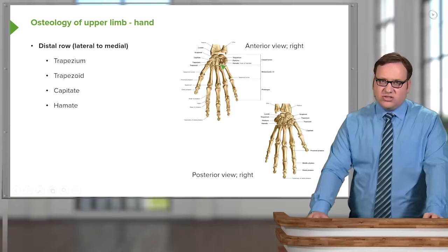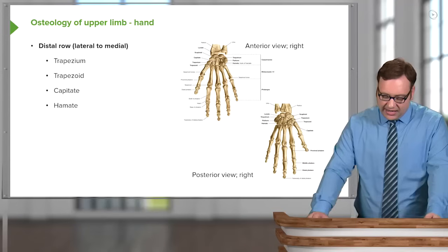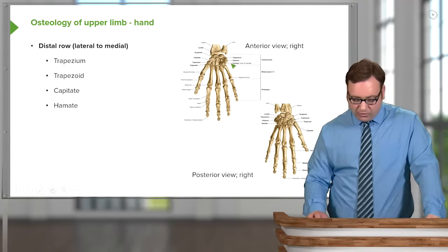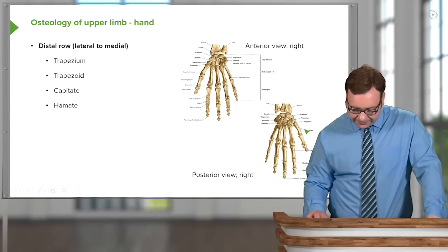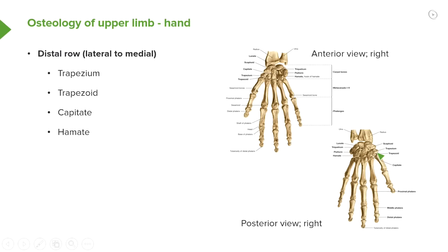We have these two rows with four bones forming each row. We can see them both on the anterior and the posterior view. In the posterior view we can see trapezium, trapezoid, capitate, and hamate. These eight carpal bones offer great flexibility.